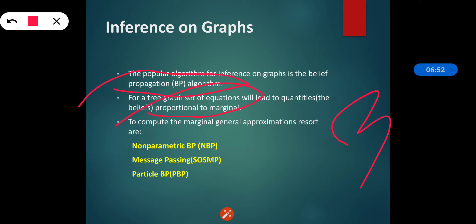To compute the marginals, general approximation approaches are used. The first is NBP — Non-Parametric Belief Propagation — where one propagates a mixture of Gaussians across the graph. The second is SOSMP — Stochastic Message Passing — where messages are represented as a combination of orthogonal functions. The third is PBP — Particle Belief Propagation — where one propagates a set of particles across the graph, and the corresponding equations are computed in variant format.